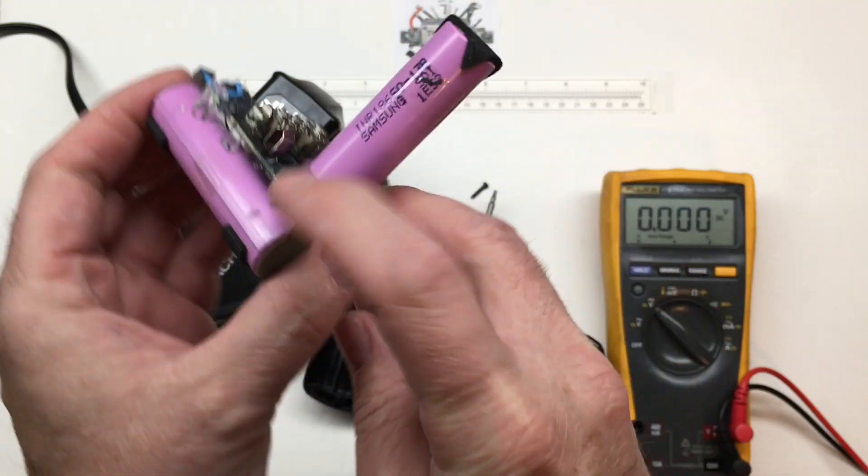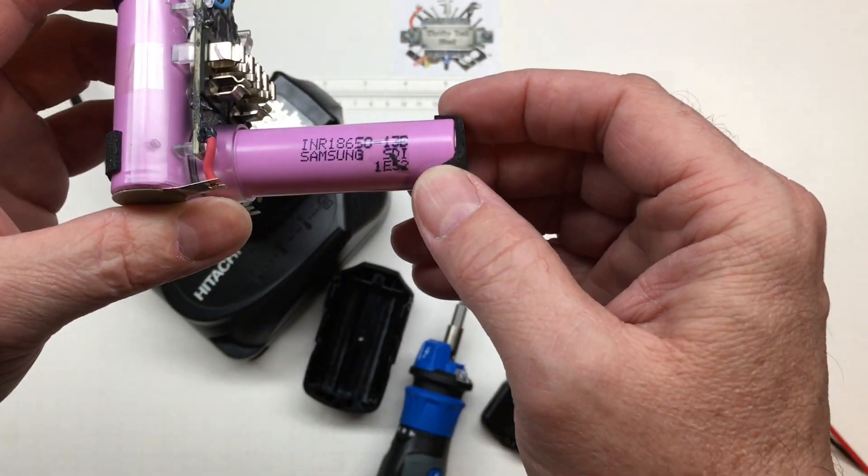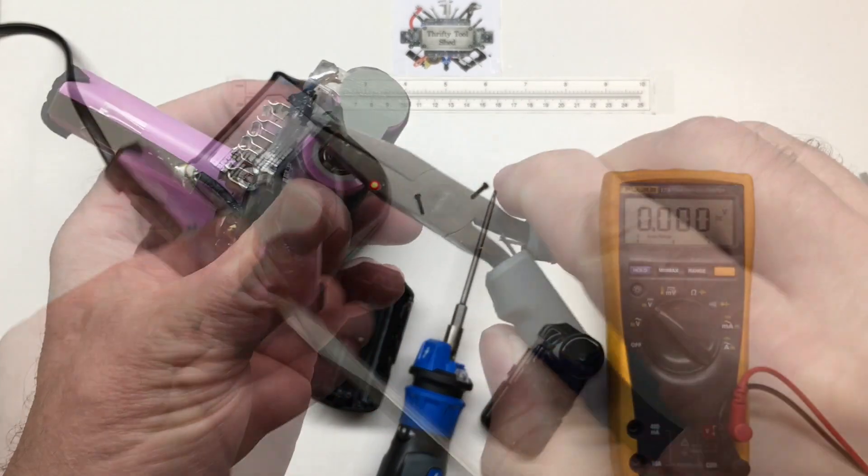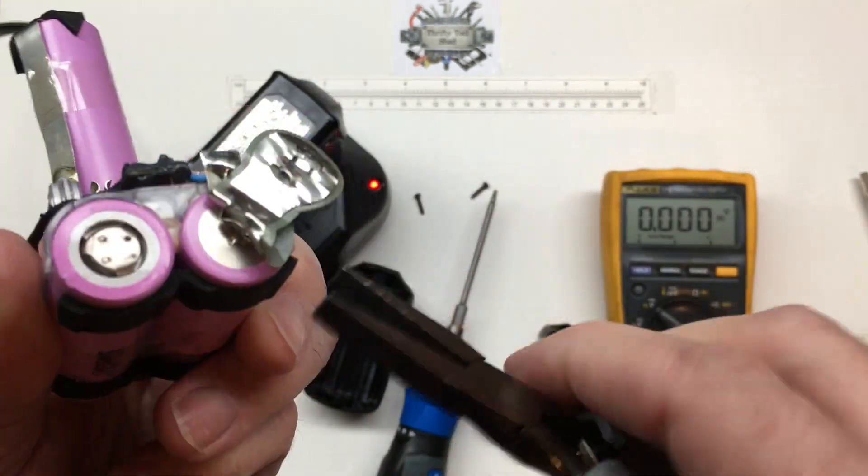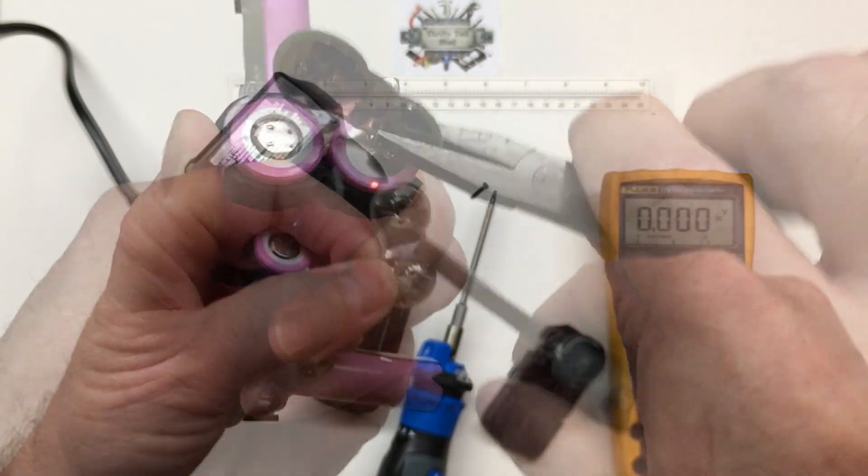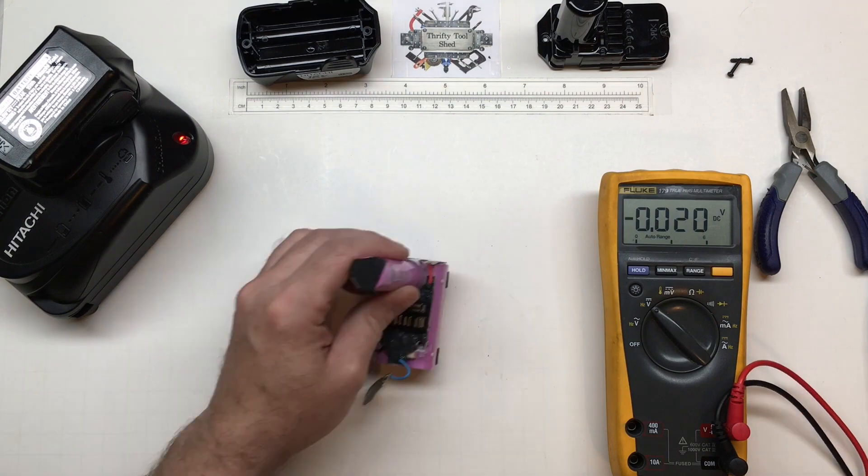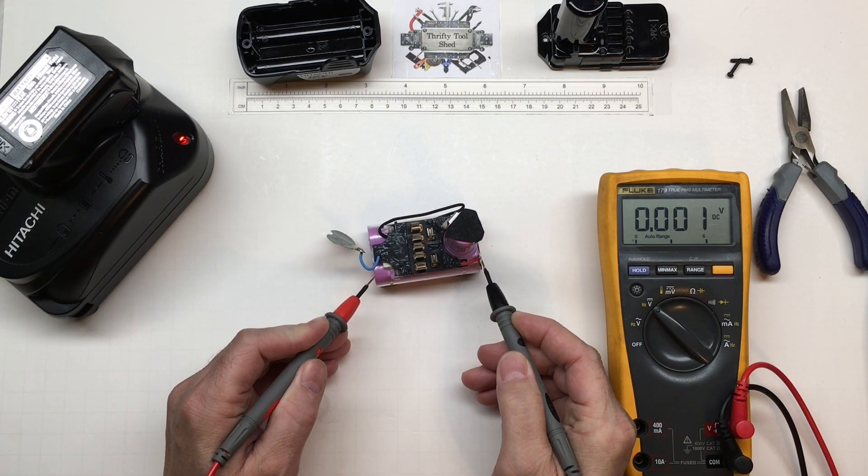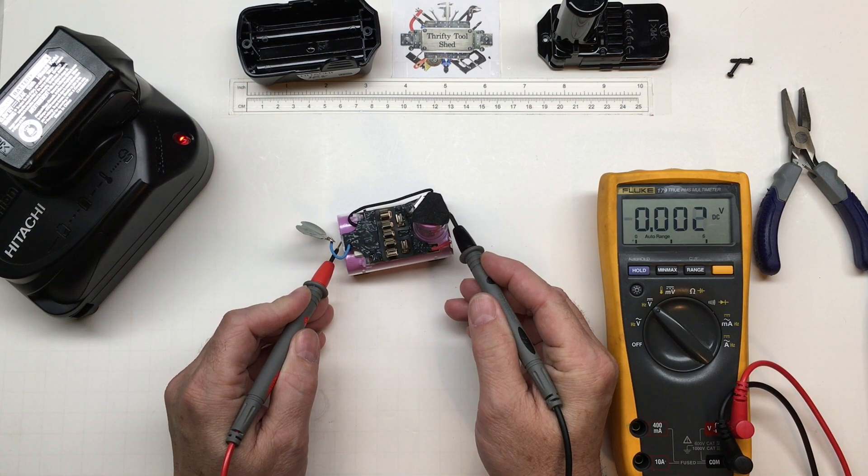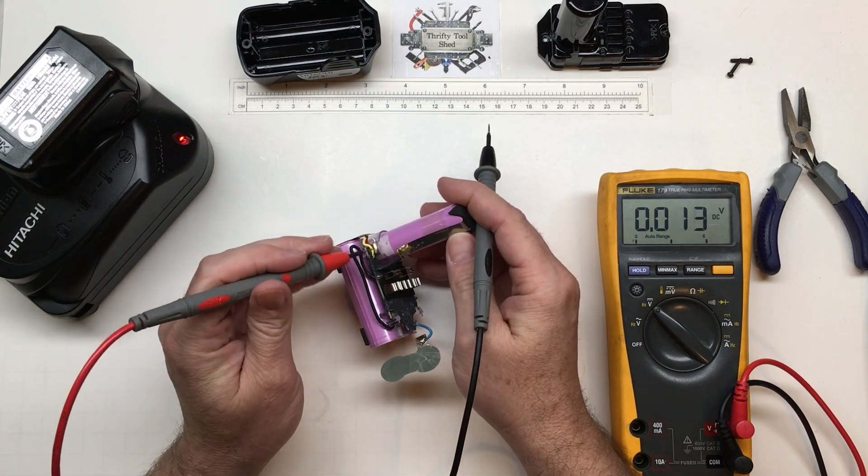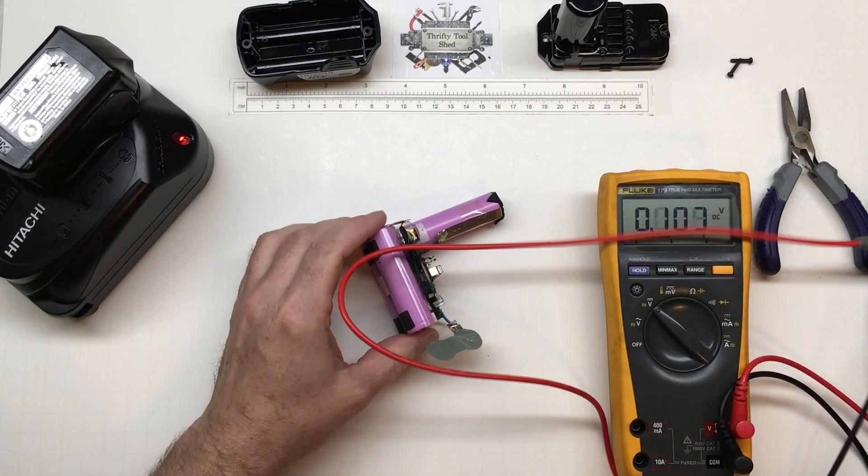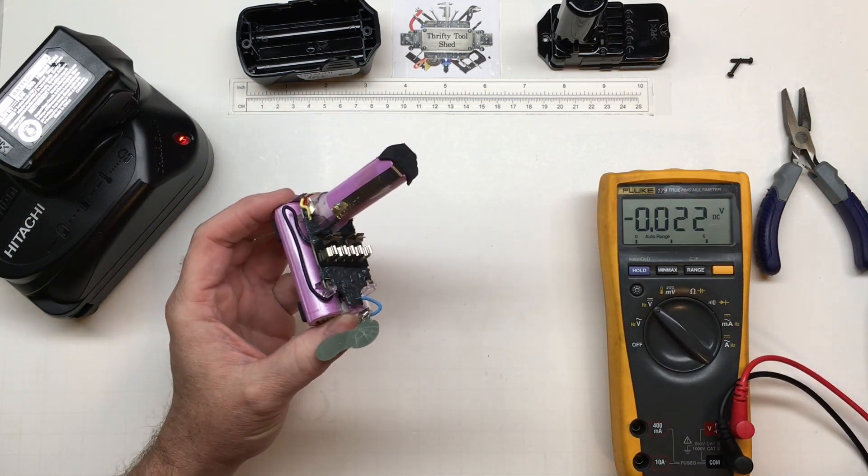So we have a Samsung 18650-13B cell. Zero volts, zero volts. We can go across this one here and here, zero volts.